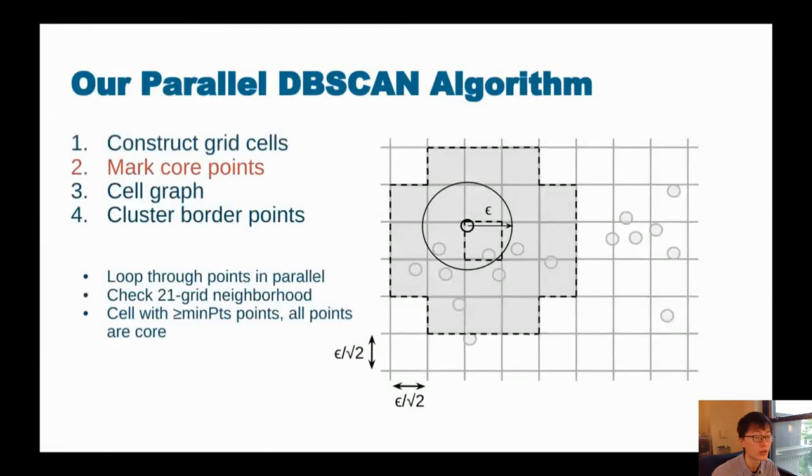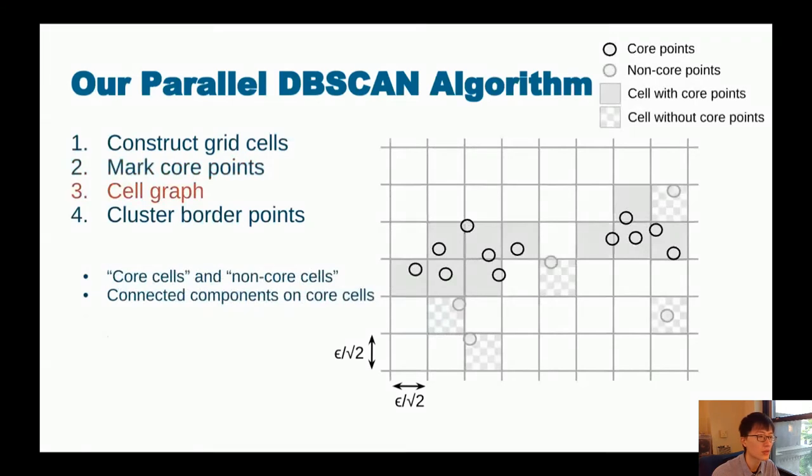With the grid, we'll go ahead to mark the core points. We'll loop through the points in parallel. And for each point, we have to check its epsilon circle and every point inside. With the grid data structure, we're able to guarantee that all points that fall into the epsilon circle must be in the 21 cell neighborhood. And the advantage of the grid data structure is that when the cell becomes very dense, when it has more points than minPts, we're able to instantly determine that every point must be a core point.